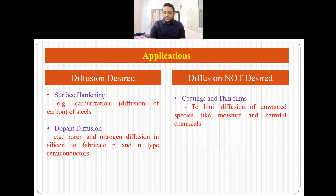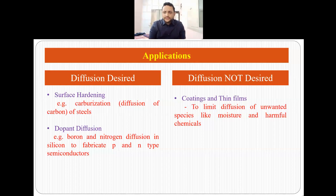There are also applications where diffusion is not desired. For example, coatings and thin films, which are applied to many materials or products, limit the diffusion of unwanted species like moisture and harmful chemicals. So diffusion is desired in some applications and not desired in others.